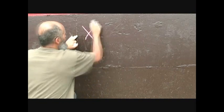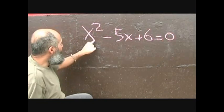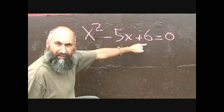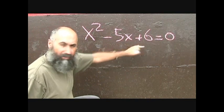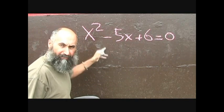So we just did x squared plus 5x plus 6 equals 0. Let's change it up just slightly and see what happens with our results. Now we've got x squared minus 5x plus 6 equals 0. All I did was change the plus sign to a minus sign for this problem.